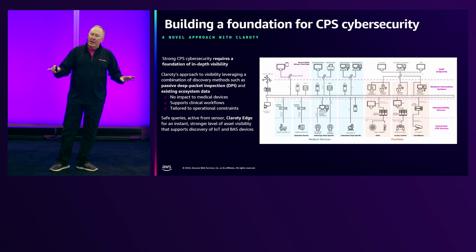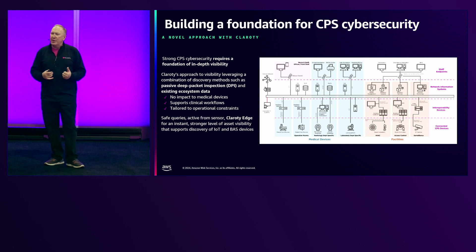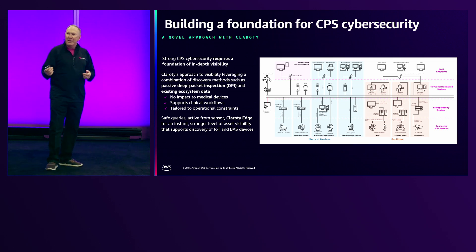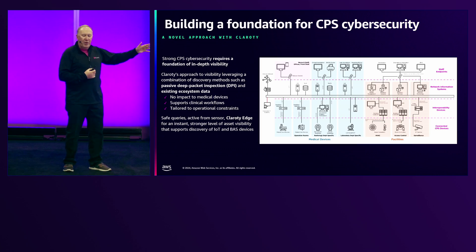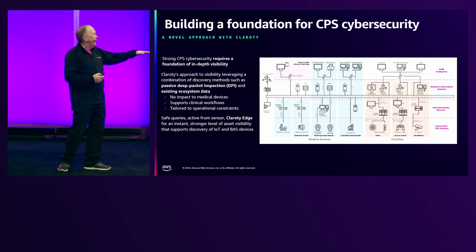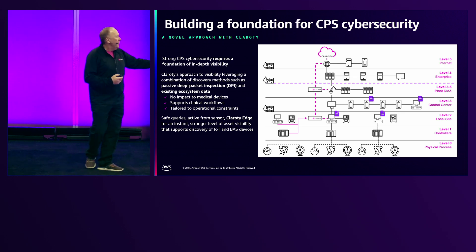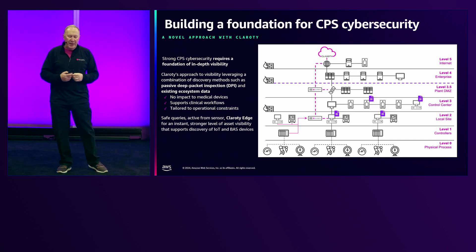The key to any advanced CPS protection is going to start with visibility. Visibility and understanding the assets that you have is really the critical part. We leverage a combination of agentless discovery methodologies, like passive deep packet inspection and safe queries with something we call Clarity Edge, that communicates with devices in their own native protocol. This provides visibility into both the flatter healthcare and commercial environments as well as Purdue-level OT environments. Sensors are placed in strategic locations within those environments that don't break the Purdue rules but allow communication up to the level necessary to get data into the cloud.